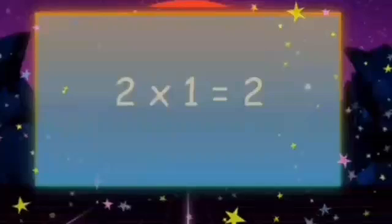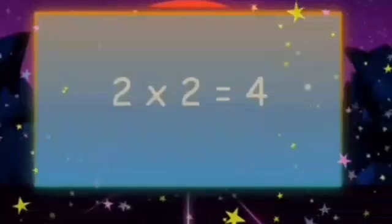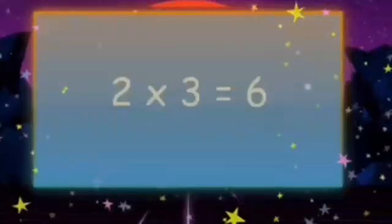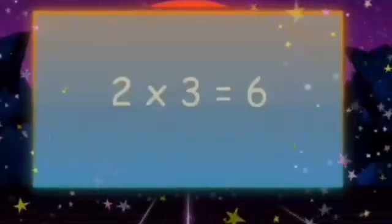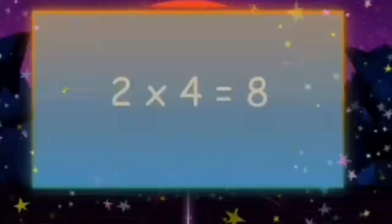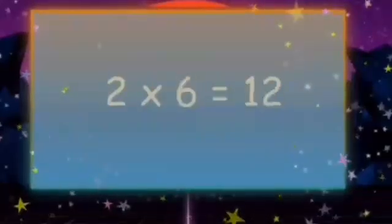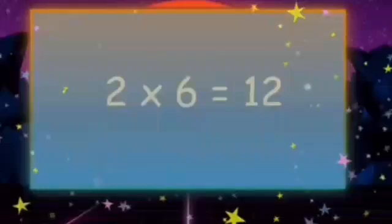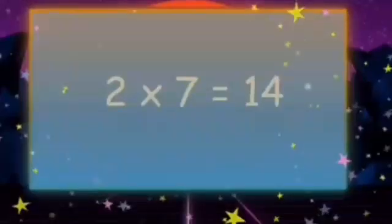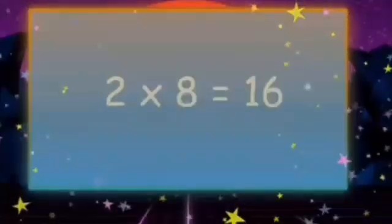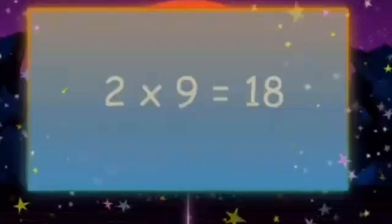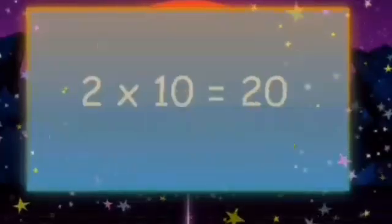2 0s are 0. 2 1s are 2. 2 2s are 4. 2 3s are 6. 2 4s are 8. 2 5s are 10. 2 6s are 12. 2 7s are 14. 2 8s are 16. 2 9s are 18. 2 10s are 20.